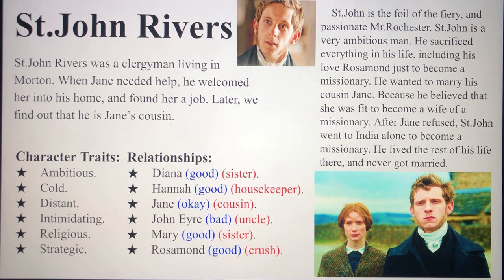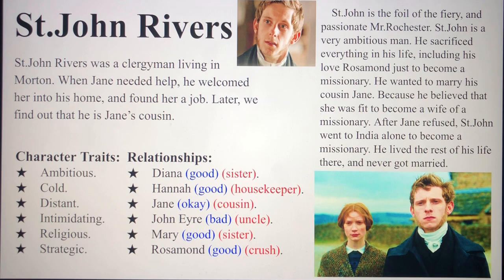Mary — good; his sister. Rosamond — good; his crush with whom he had romantic feelings, but St. John did not think she would be a fit wife. St. John is the foil character of the fiery and passionate Mr. Rochester. He sacrificed everything, including his love for Rosamond, to become a missionary. He wanted to marry Jane because he believed she was fit to be a missionary's wife. After Jane refused, St. John went to India alone, stayed single, and never got into a relationship.